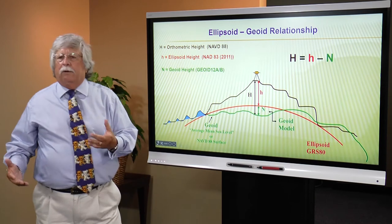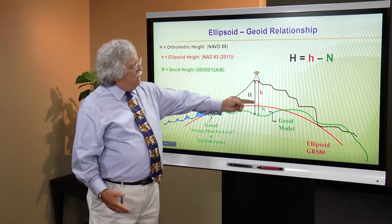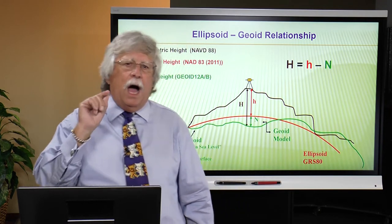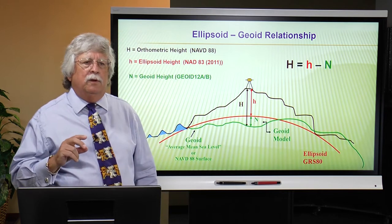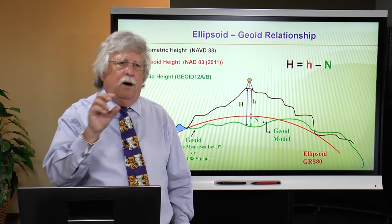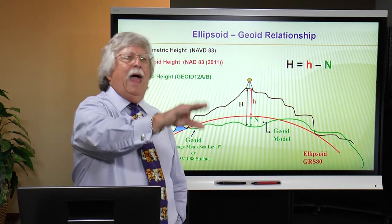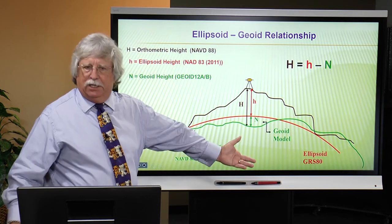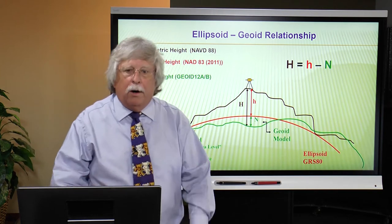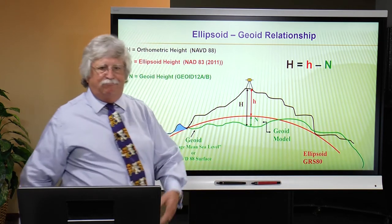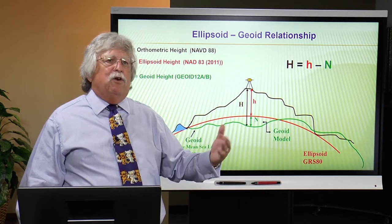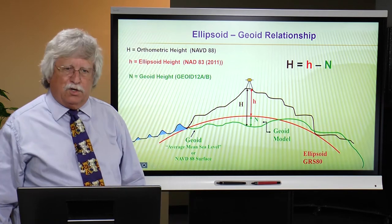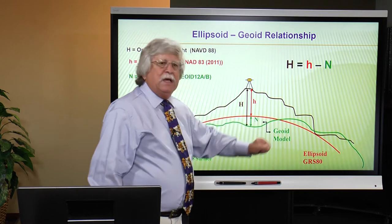Water does not necessarily run downhill in GPS ellipsoid heights. If I want to acquire good orthometric heights, I need to know the relationship of the ellipse and the geoid. This is important and commonly misconstrued — the geoid is the surface of the vertical datum. In the future that will be true, but it is not true today. That's why my slide shows 'average mean sea level' which is the geoid, or the surface of NAVD88. We are dealing with NAVD88 as our national vertical datum for the conterminous US and Alaska.